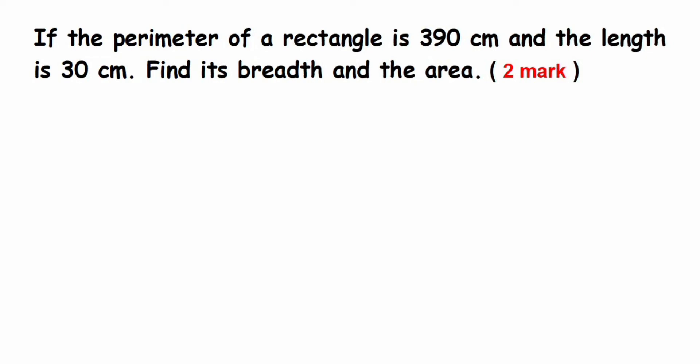Hey everyone, so here's a question from perimeter and area. This is a two-mark question. The question is: if the perimeter of a rectangle is 390 centimeter and the length is 30 centimeter, find its breadth and the area.